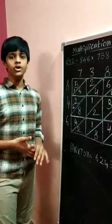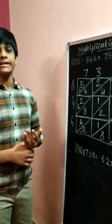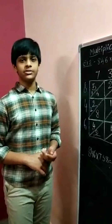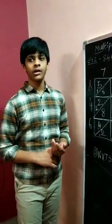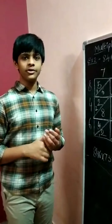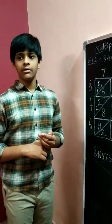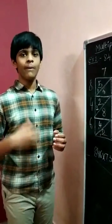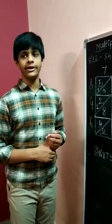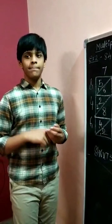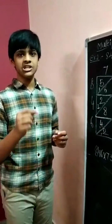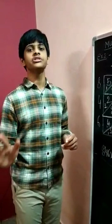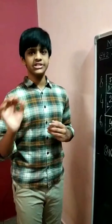If you want to multiply a 3-digit number with a 2-digit number, we can do the multiplication in the same method by keeping 0 in the hundreds place of the 2-digit number.